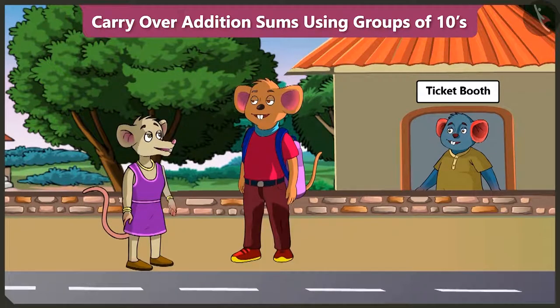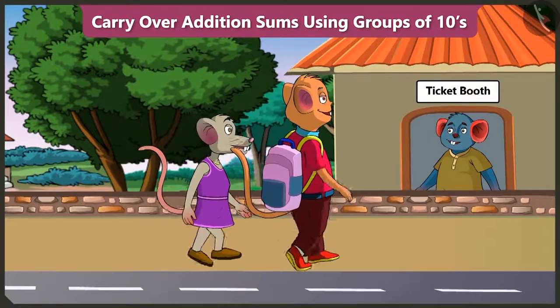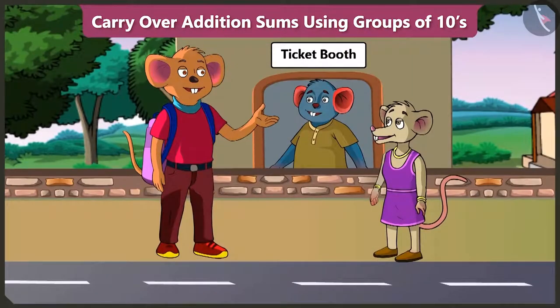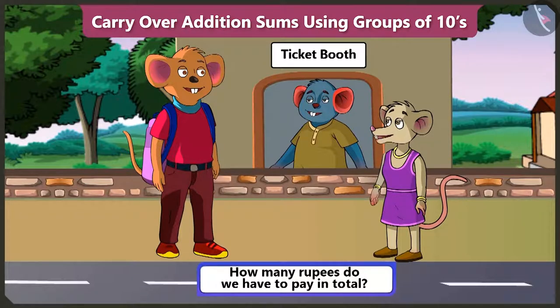Let's get a bus ticket from there to go to the zoo. Yes, let's go. Please give us two tickets to the zoo. You are older, so your ticket will be 48 rupees, and for this child the ticket will be 24 rupees. So Choo Choo, how many rupees do we have to pay in total?